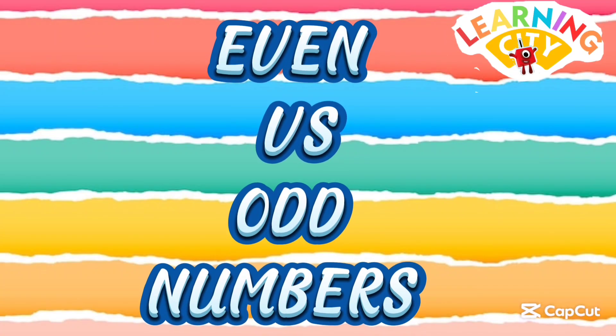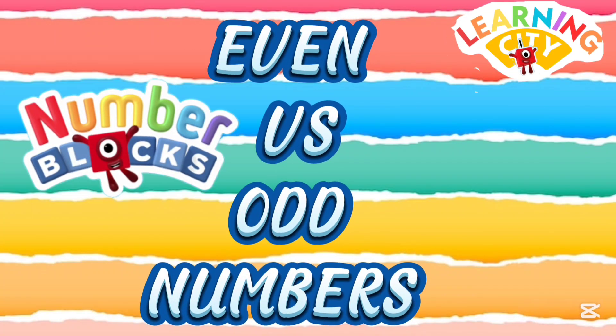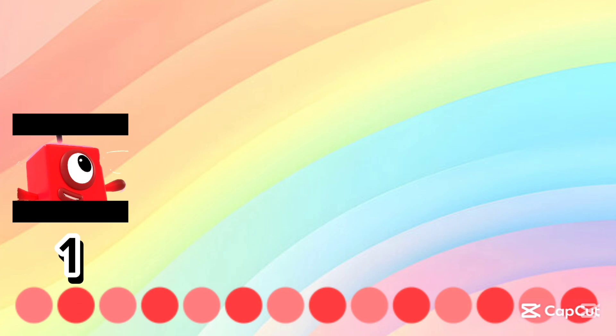Hi kids, let's learn even versus odd numbers using number blocks. Odd numbers are one, three,